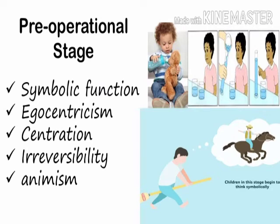Next, we have animism. Animism is the tendency of the child to attribute human-like traits or characteristics to inanimate objects. For example, in situation number one, the child said that during the day Mr. Sun is awake, and during the night he is sleeping — but of course the sun cannot actually wake up or sleep. Another example: when a child plays with a Barbie doll, gives it a name, and says 'Mommy, ang sabi ni Barbie doll, gutom na daw siya' — that is another manifestation of animism.